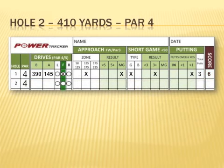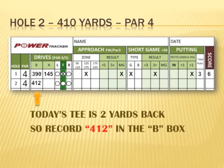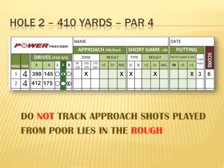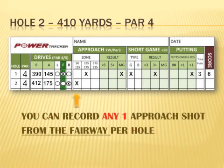Now let's play hole number 2. Hole 2 is a 410-yard par 4 and today's tee is 2 yards back, so we record 412 under B. We hit our tee shot off to the right and into the rough, 175 yards from the hole. Our lie is not very good and there is water in front of the green, so we decide to lay up. We do not track this shot since it was played from the rough. After playing our second shot back into the fairway, we are 113 yards from the hole, and since we can record one approach from the fairway per hole, we will track this shot as our one approach shot.